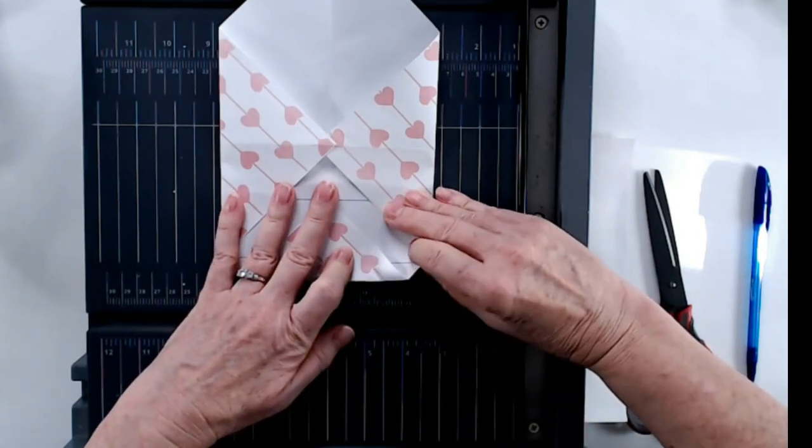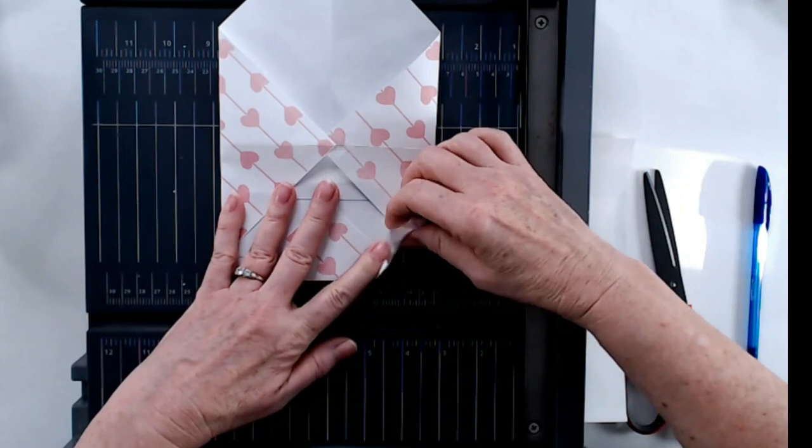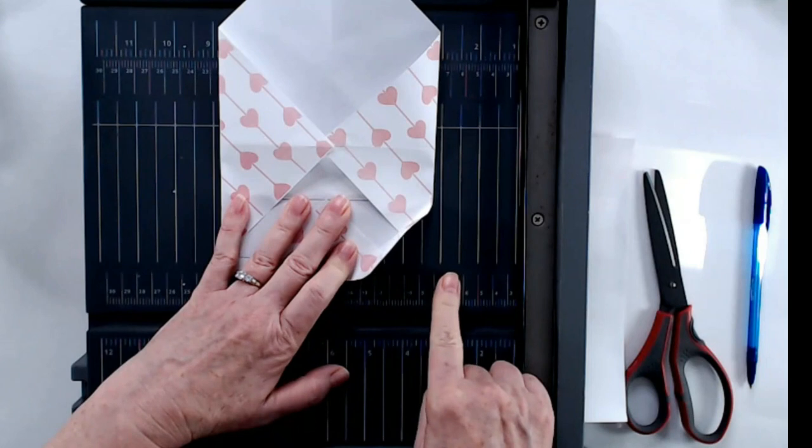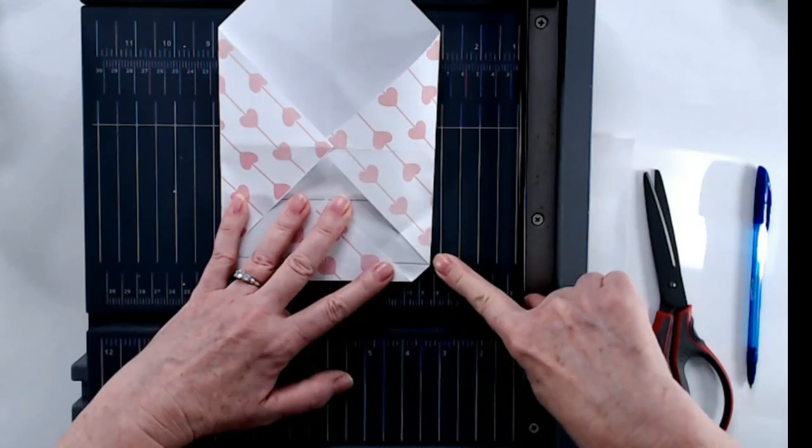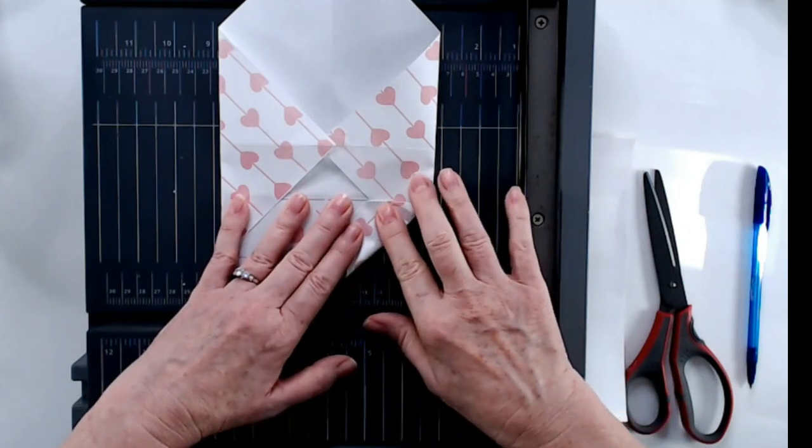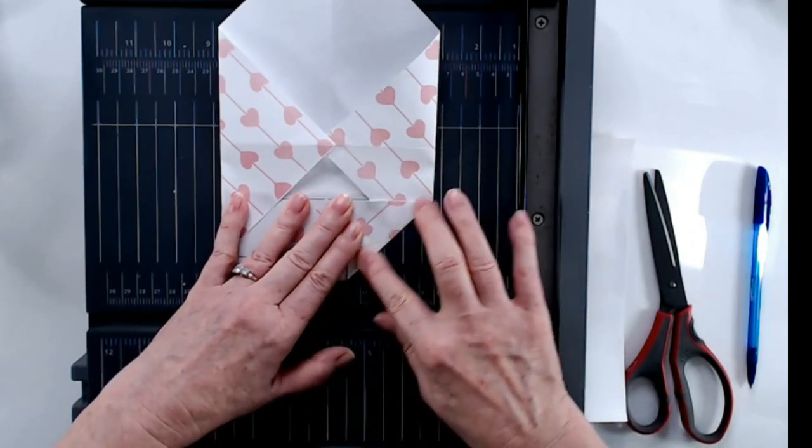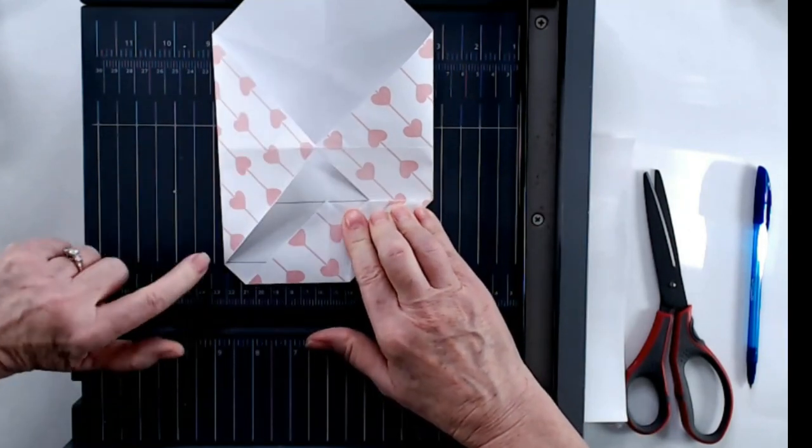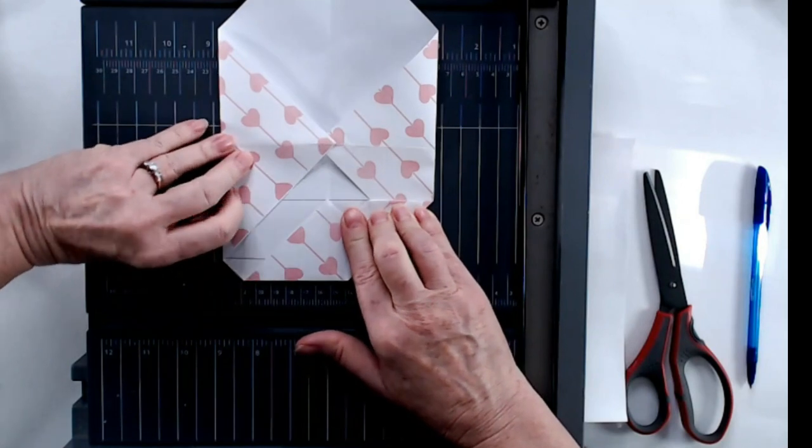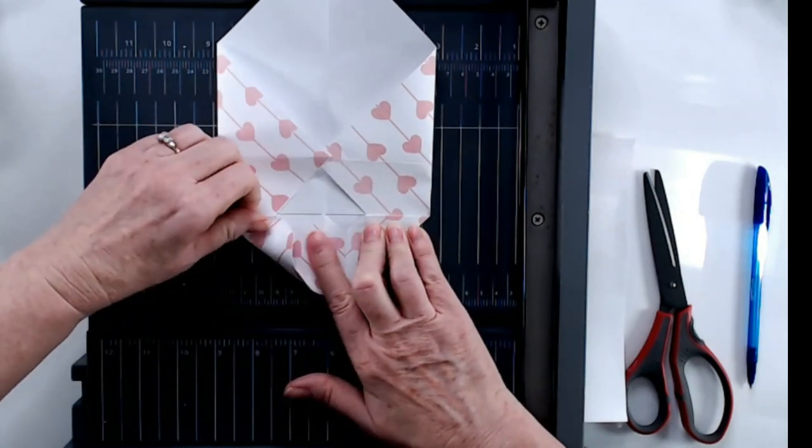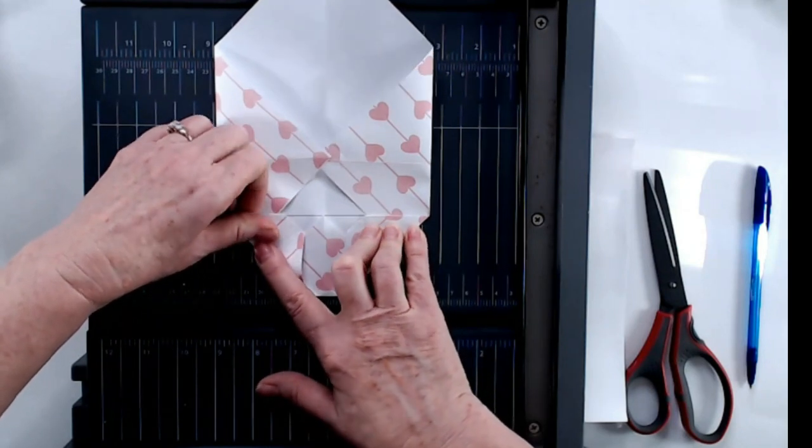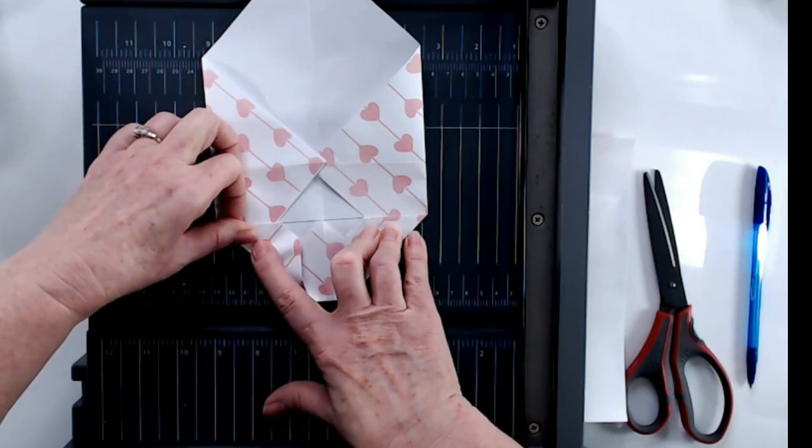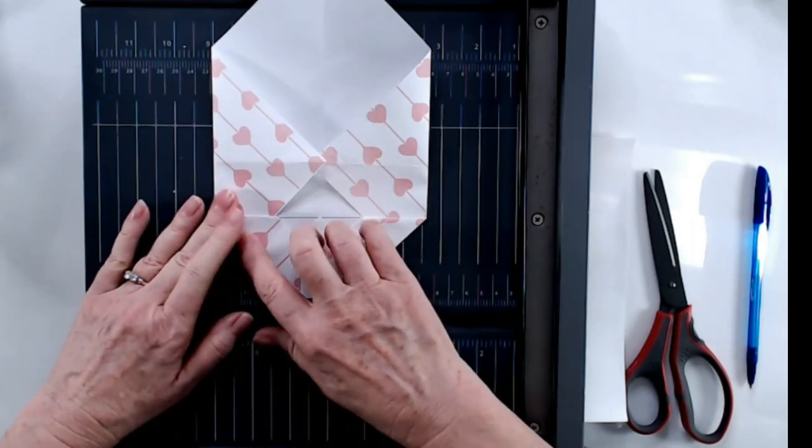Then you take this corner, fold it over and also meet the imaginary line. Can you see that? So this corner right here on the outside edge. Take, fold it over, meet the imaginary line like that. Again, you can use your thumbnail because it's always available. Same with this corner. Meet the imaginary line. Just like that. Voila. Like that.